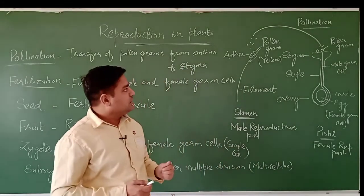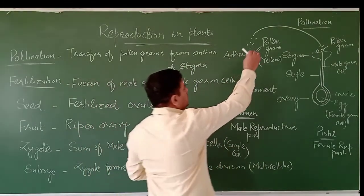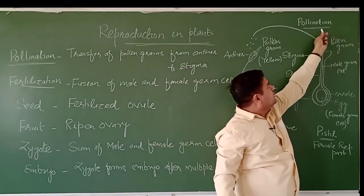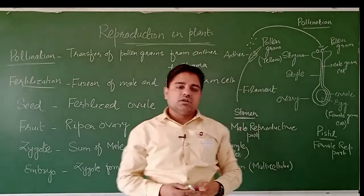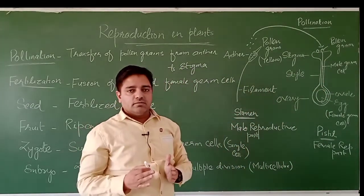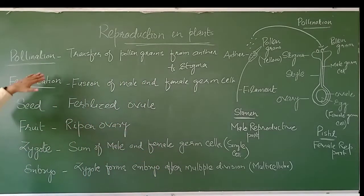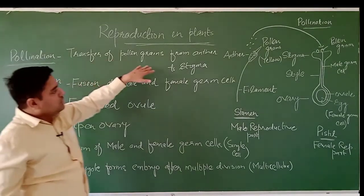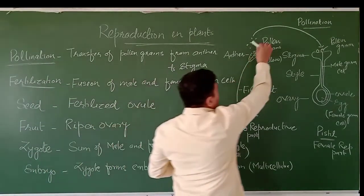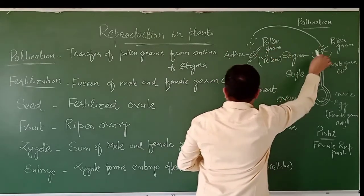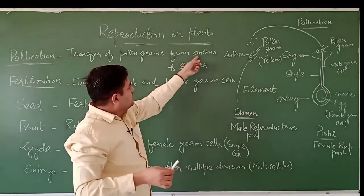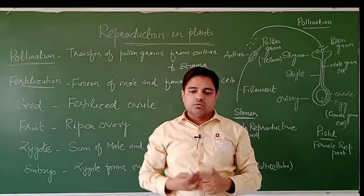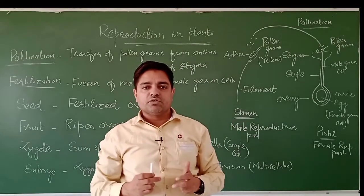When the pollen grains come to the stigma, this process is known as pollination. Pollination is the transfer of pollen grains from the anther to the stigma. This process is the first necessity for sexual reproduction in plants.